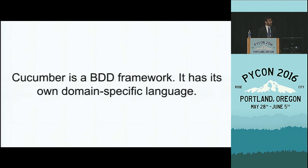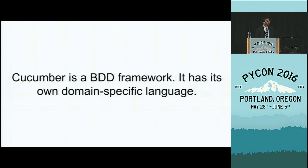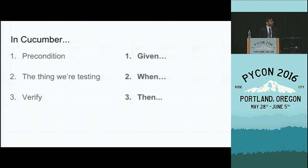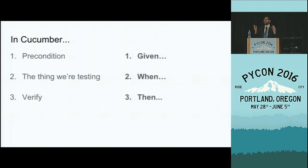When we think about BDD, we are forming our tests not in the context of how the code is supposed to behave, but what users of our code are trying to accomplish. To do this, we have a domain-specific language. Going back to our Rosetta Stone, we express preconditions using clauses that begin with the word 'given' — so, given I have a string 'hello world', or given I'm a user who's logged into my website.